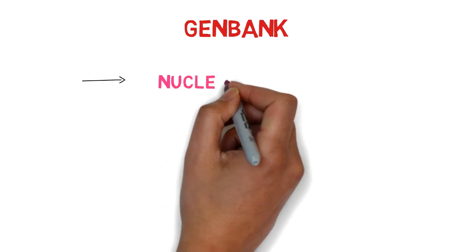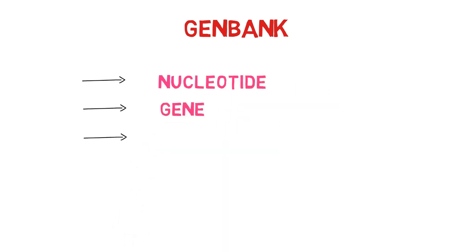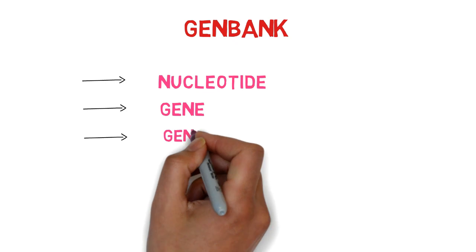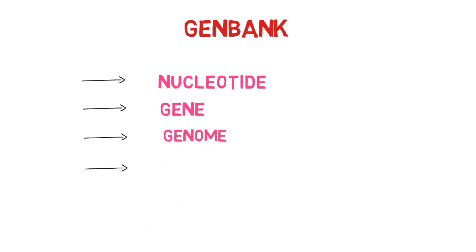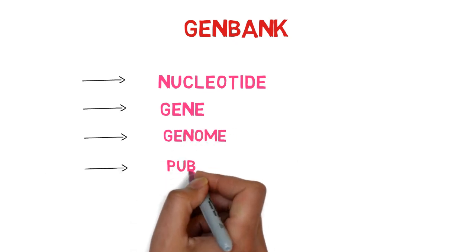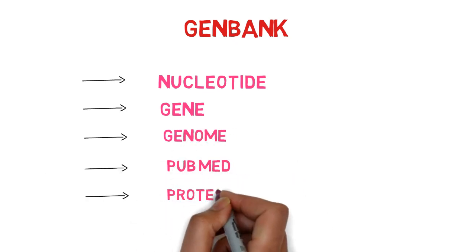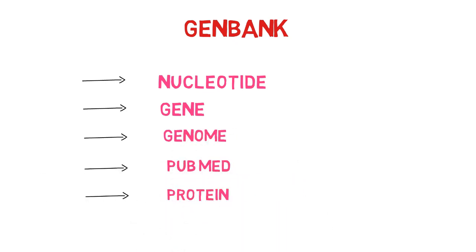On the NCBI page, there are five important tools. The first one is nucleotide. The second is gene. Then genome. The fourth one is PubMed. And the last one is protein. Today I will only discuss nucleotides.